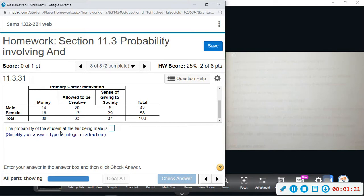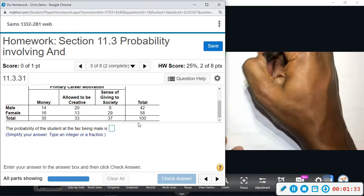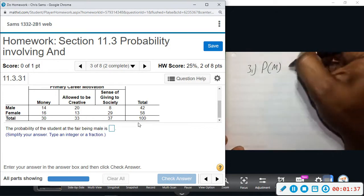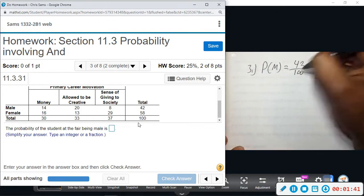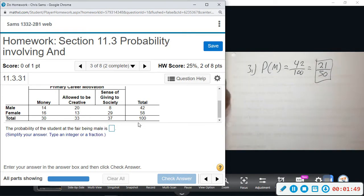Alright, we want to know the probability of the student being male. So the probability of male - we look at the total males, 42 out of 100. That's all we do, is look at the totals. So probability of male: there's 42 males out of 100. And if we reduce, divide by 2, that will give us 21 out of 50, and we cannot reduce any further than that.